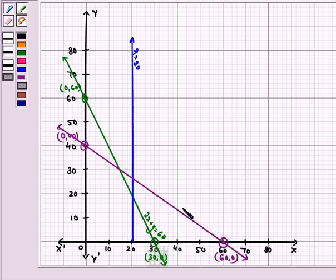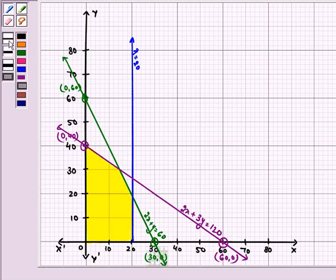This is representing 2X plus 3Y equal to 120. Now the feasible region will be the shaded region with endpoints as (0,0) as it is included in each of the inequalities.